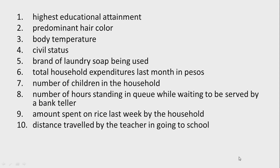Now let's take a look at this next exercise and answer whether each is qualitative or quantitative, and if quantitative, identify the type. Number 1: highest educational attainment. Number 2: predominant hair color. Number 3: body temperature. Number 4: civil status. Number 5: brand of laundry soap being used. Number 6: total household expenditures last month in pesos. Number 7: number of children in the household. Number 8: number of hours standing in queue while waiting to be served by a bank teller. Number 9: amount spent on rice last week by the household. Number 10: distance traveled by the teacher in going to school.